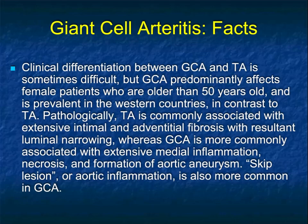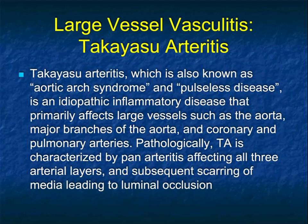The differentiation on imaging between giant cell arteritis and Takayasu's can be difficult. Giant cell affects older patients, is more common in females and in Western countries, and skip lesions are also more common with giant cell. Takayasu's arteritis is the second large vessel vasculitis, also known as aortic arch syndrome or pulseless disease — an idiopathic inflammatory disease predominantly affecting large vessels such as the aorta, its major branches, and coronary and pulmonary arteries.